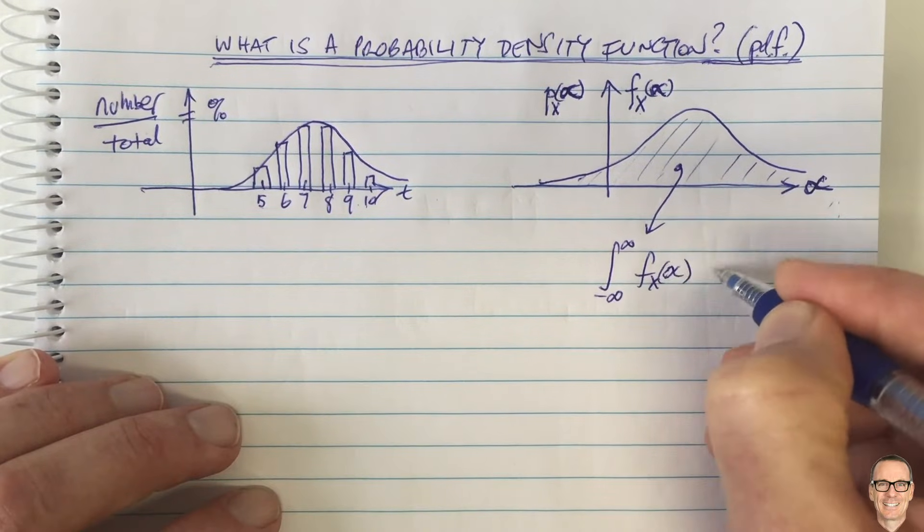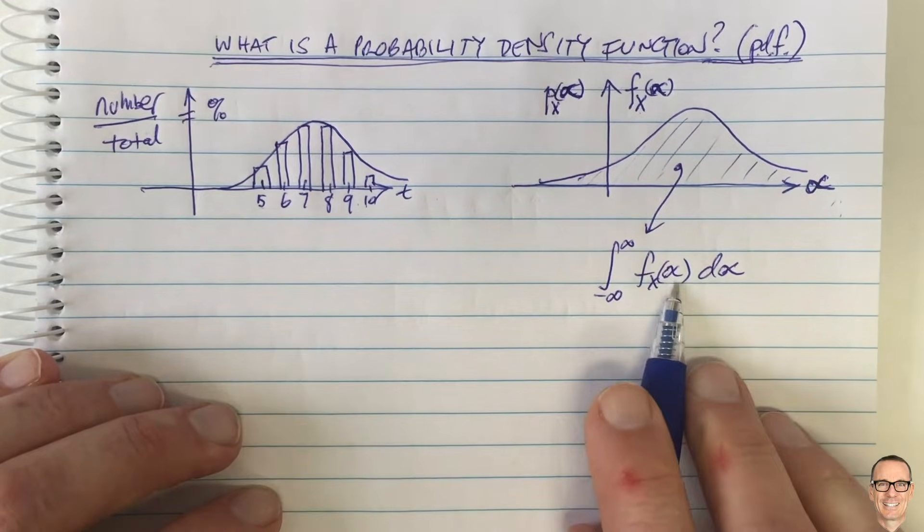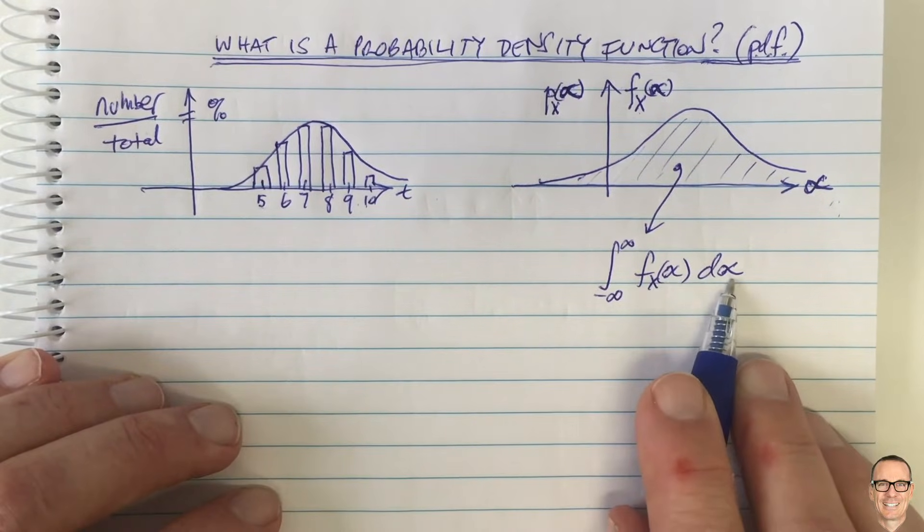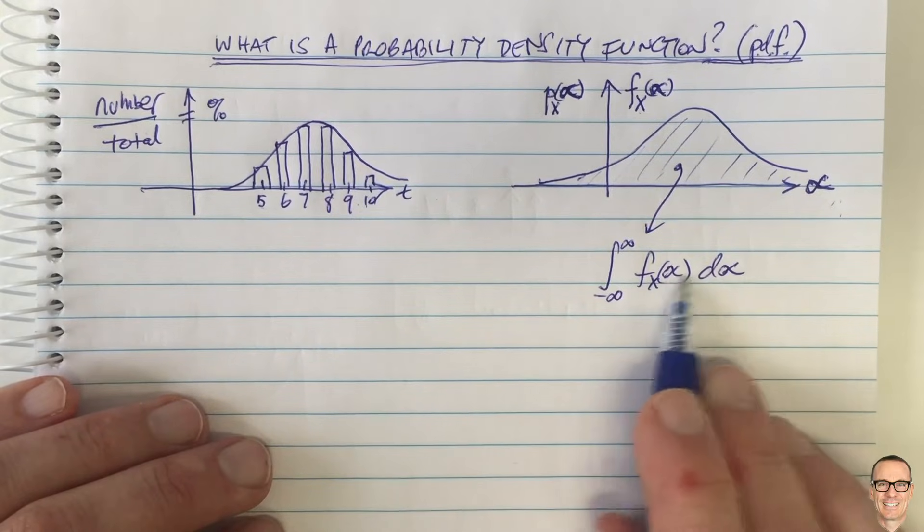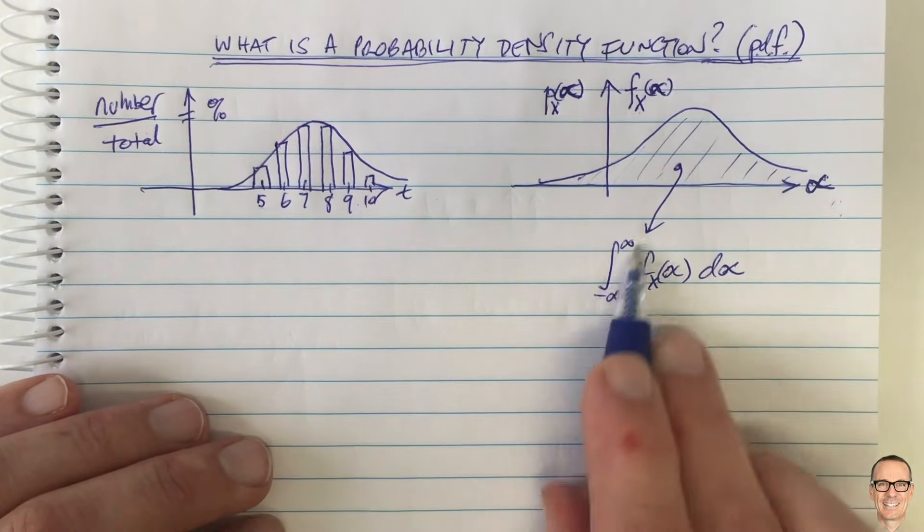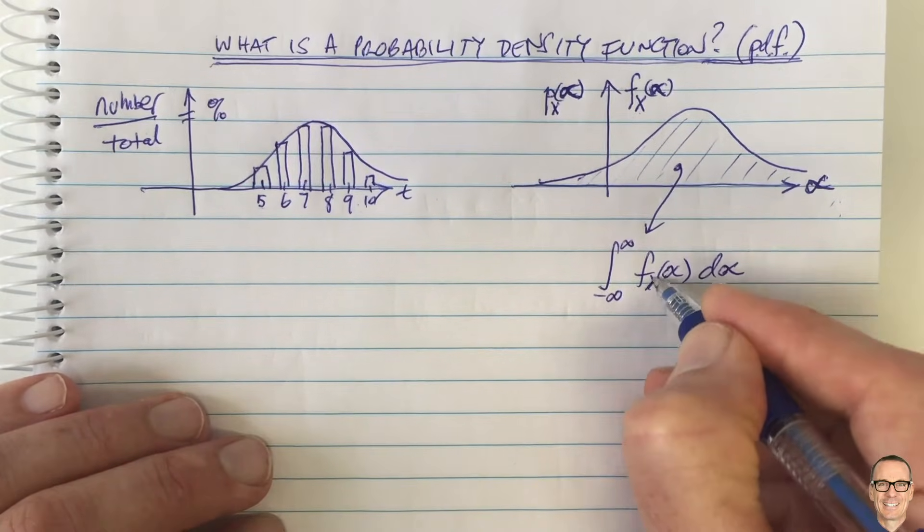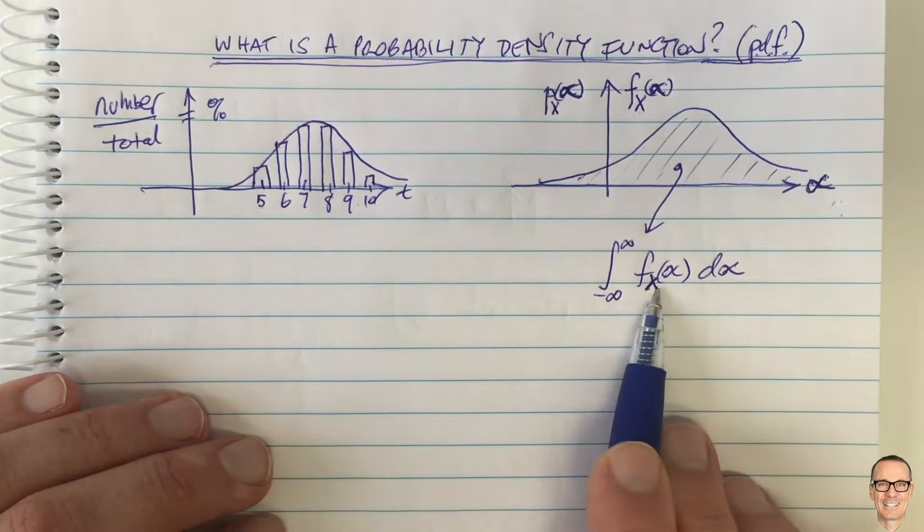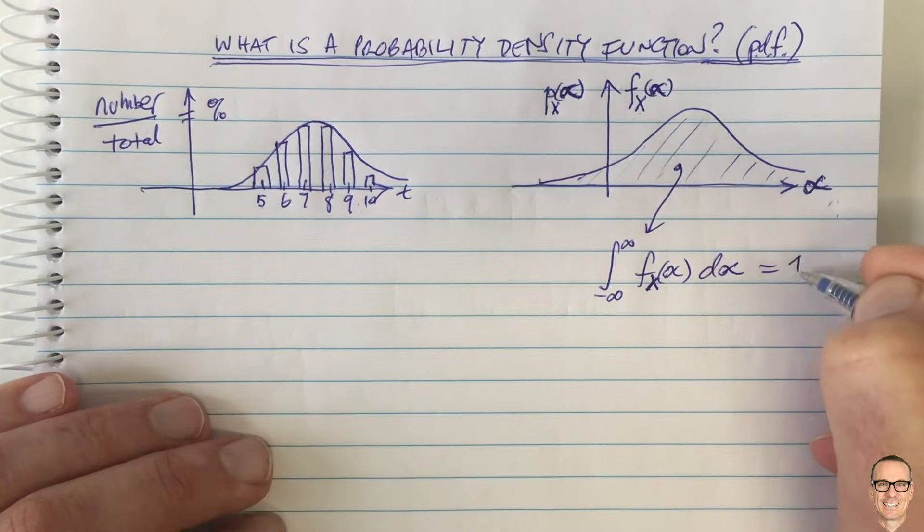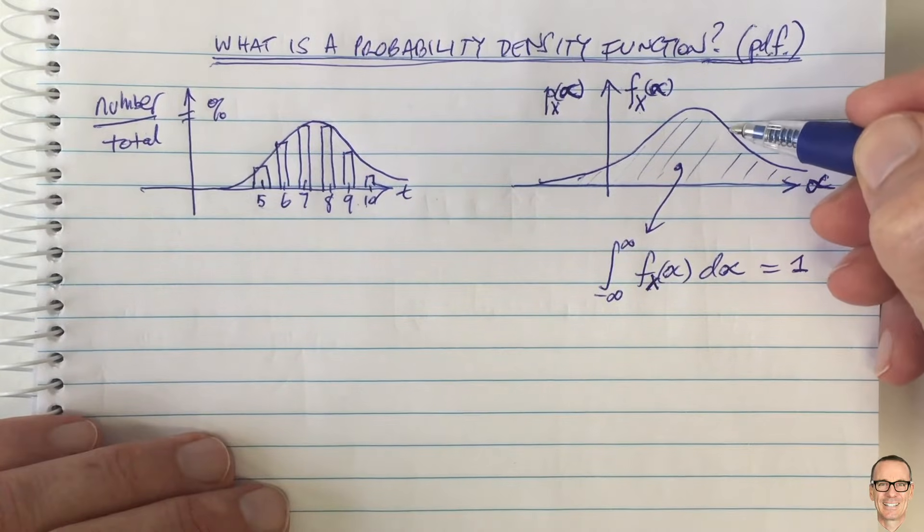And in mathematics, that's an integral from negative infinity to infinity of f_X(alpha) d(alpha). Or it could be f_X(x) dx. I'm just putting the alpha to show you that it's just the thing that we're plotting it against. It's just the thing that we're integrating against. The capital X is the thing that tells you it's the PDF for that random variable. And so this total area equals 1. This is something that we know.